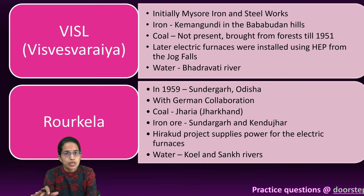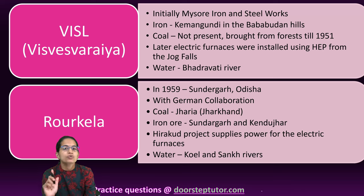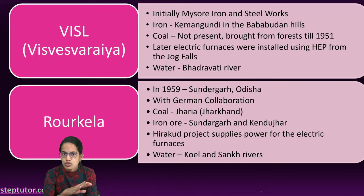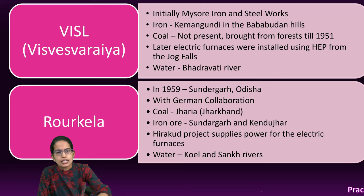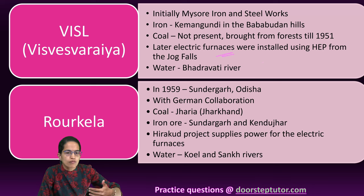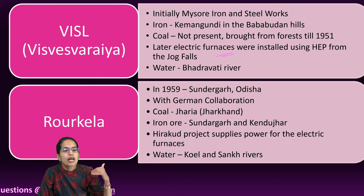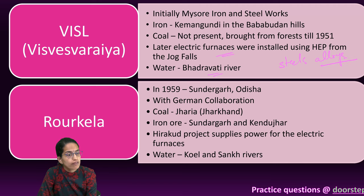The next is VISL — Visvesvaraya Iron and Steel Limited, initially known as Mysore Iron and Steel Works. Iron came from Kemmangundi in the Bababudan Hills. Coal was not present in the region but was brought from forests until 1951. Later, rather than coal, an electric furnace was established, using water from Jog Falls as the source of hydroelectric power, and water from the Bhadravati River. Visvesvaraya specializes specifically in steel and specialized alloys, making it a very important plant.